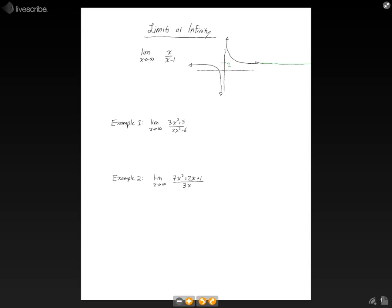We can see that the function is x over x minus 1. So let's take a look at the substitution method, and let's plug infinity in for those values of x. So we'll get infinity over infinity minus 1. Those sound pretty much like the exact same values to me.